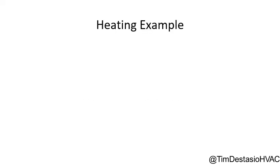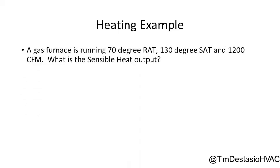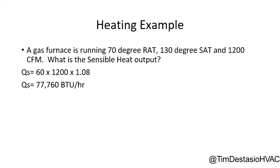Let's use the sensible heat formula in a heating example. We're working on a gas furnace with a 70-degree return air dry bulb temperature and a 130-degree supply air temperature — a typical gas furnace scenario. When we measure our CFMs, we get 1,200 CFM. Plugging into the sensible heat formula: the temperature difference is 60 degrees (130 minus 70), times 1,200 CFM, times 1.08. We arrive at 77,760 BTUs per hour — that's how much sensible heat that gas furnace is currently putting out.